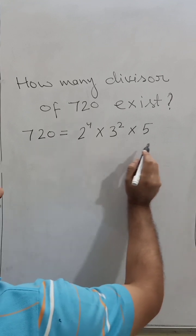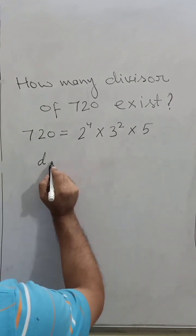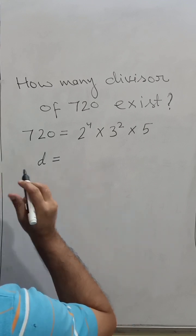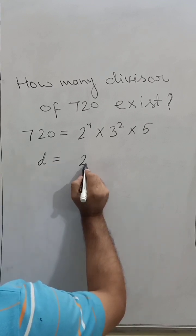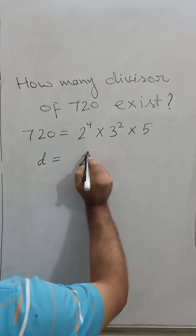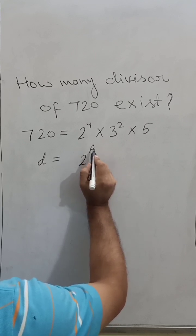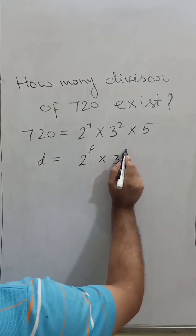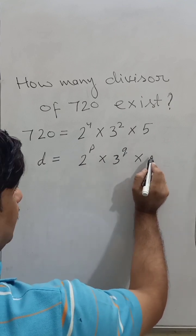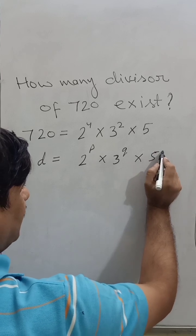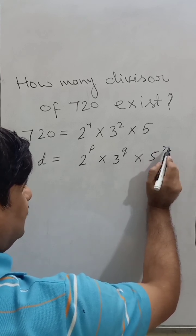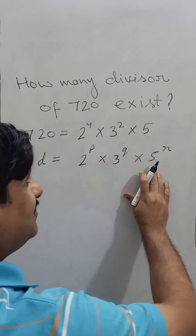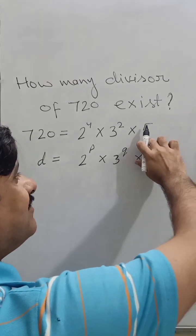Let the divisor be D, and D equals 2 to the power P times 3 to the power Q times 5 to the power R, only in this form. Because if there will be any other prime number, then it cannot divide this number.